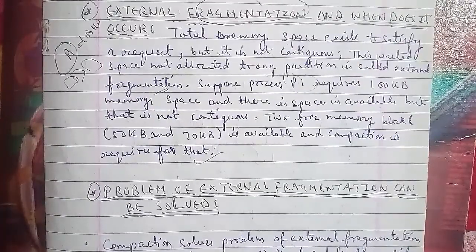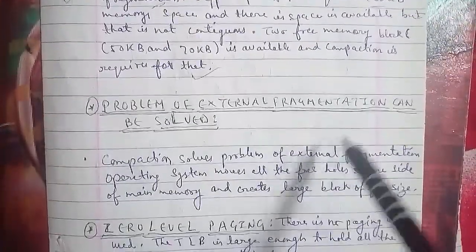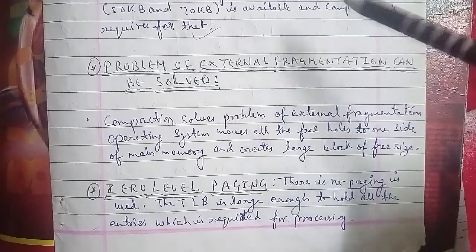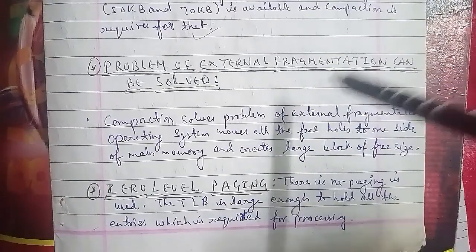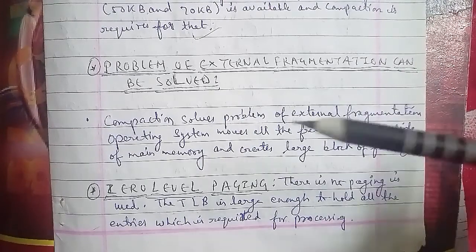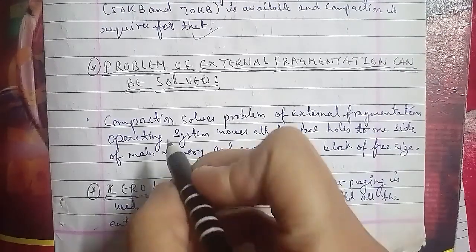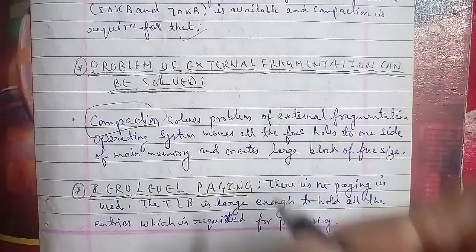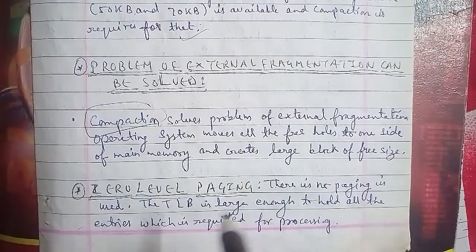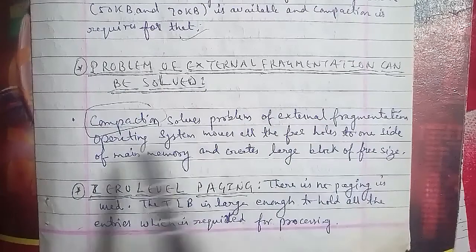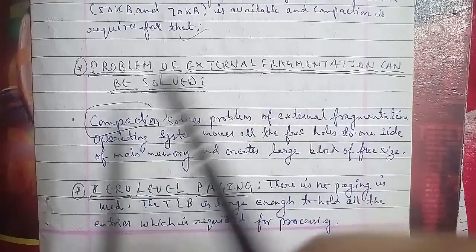Compaction means compressing the data so it can solve the external fragmentation problem. The operating system moves all the free holes to one side of the main memory and creates large blocks of free space. All the wasted free holes are compacted to create a large block of free space in main memory.